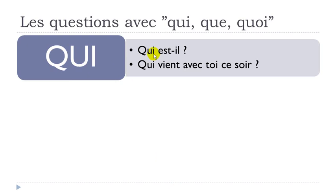Remember the formal, normal way when we start a question with QUI — as we saw in previous lessons — you will have to change the order and put your subject IL, meaning HE, after the verb: QUI EST-IL? And then you make the liaison: QUI EST-IL? Who is he? QUI EST-IL?